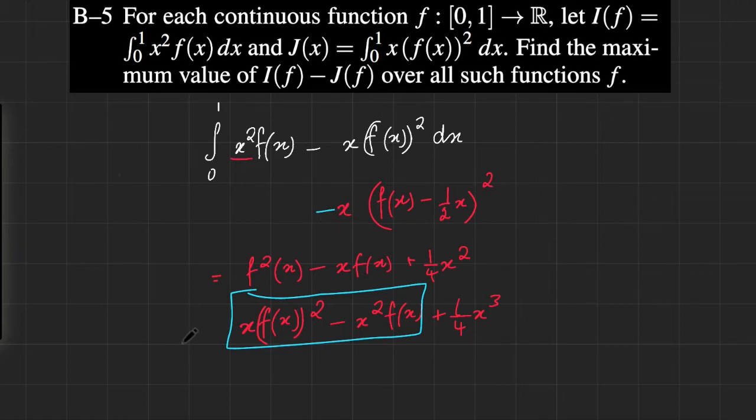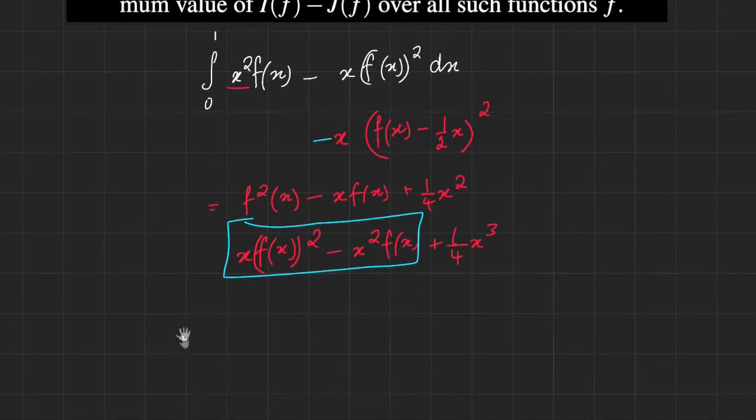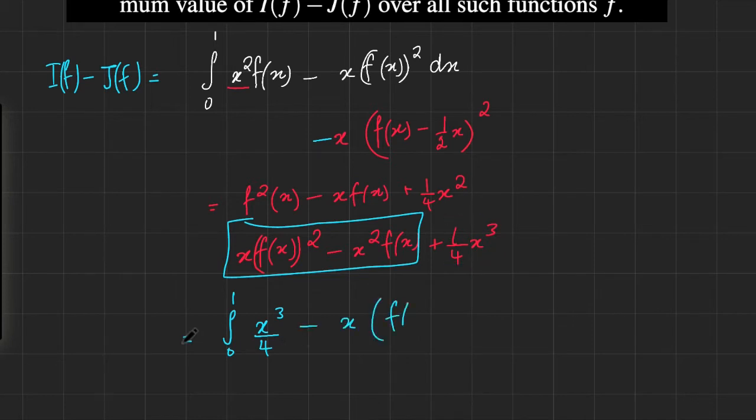So it seems to be the case that I can rewrite this integral as so. I can rewrite I(f) - J(f) as equal to the integral from 0 to 1 of x³/4 minus x times (f(x) - ½x)².